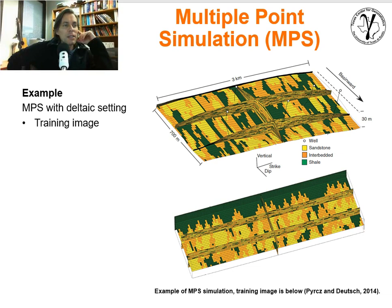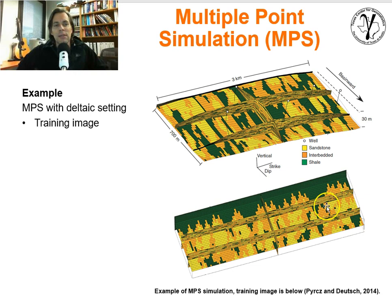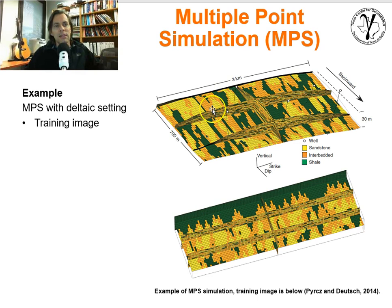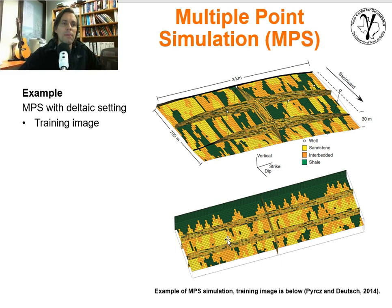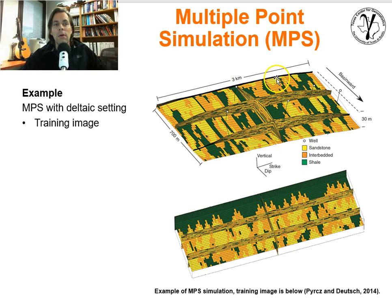Here's a good example of multiple-point simulation. We have the training image built by an object-based method — a nice, regular training image with good patterns. Here's the MPS model above. What do you observe? First, it should look very different from what we saw with indicator-based methods. There are non-linear shapes and ordering relationships captured — yellow is most common inside the orange facies, sandstone is surrounded by interbedded sandstone and shale, and the simulated realization captures those features. Green doesn't touch yellow very often. There are teardrop shapes in the training image, and we also have pretty good teardrop shapes in the simulation.